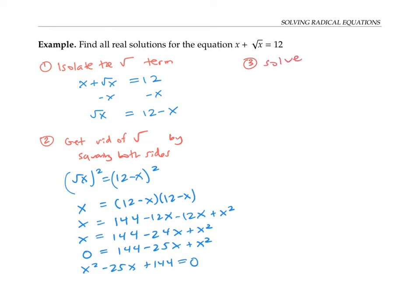I'll solve this quadratic by factoring. I'm looking for two numbers that multiply to 144 and add to minus 25. I know I'll need two negative numbers so they still multiply to a positive number.